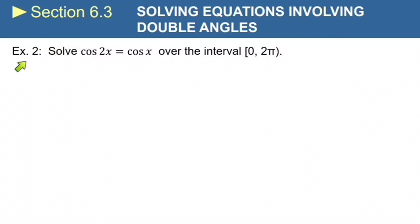Now this is example 2 from section 6.3. It says solve cosine of 2x equals cosine of x over the interval from 0 to 2π. Now the problem here is that we cannot solve this equation while one function has an argument of 2x and the other function has an argument of x. They need to both have the same argument. The easiest way for us to deal with that is to use one of our double angle identities.